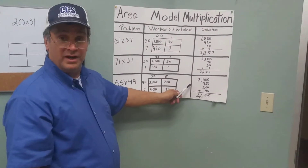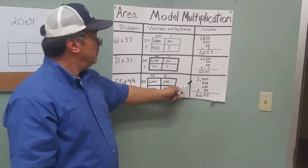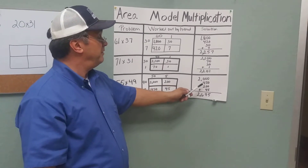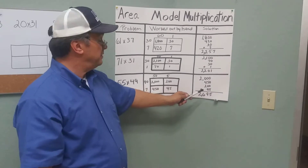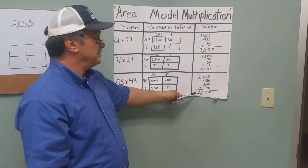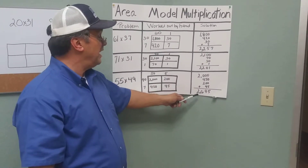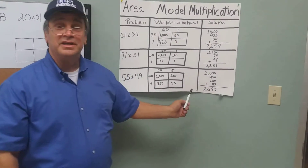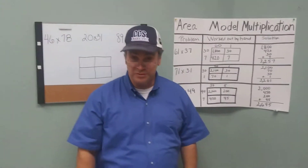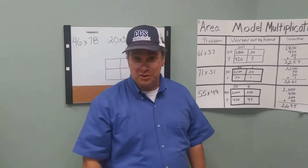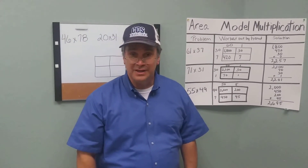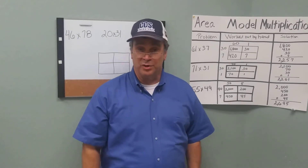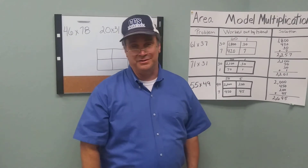Adding up our numbers, we come up with 2,000, and then 450, 200, and 45. That comes up to a total of 2,695. I'm going to give you three more equations or examples to do, and we're going to come back in a minute and work these problems out, but I want you to try it yourself.